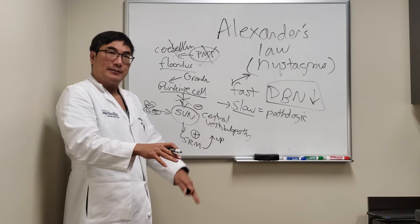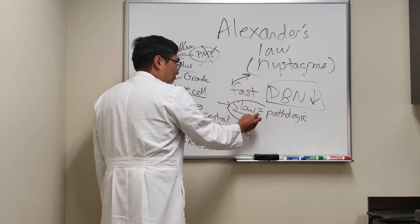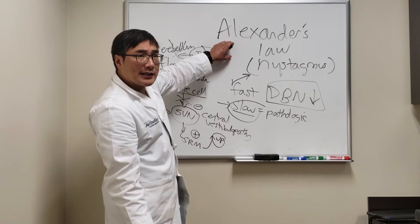And so when we have a downbeat nystagmus causing the slow pathologic up gaze, the fast component is going to be carrying the eye back down. And so for Alexander's law, what that means is if you're looking down, the eye will drift up and then you'll have to compensate with the downbeat nystagmus.